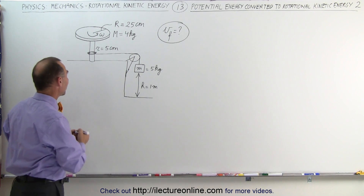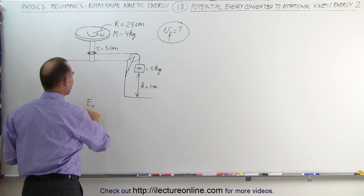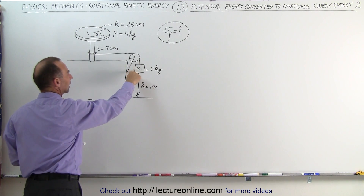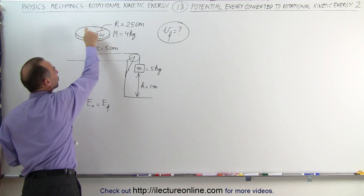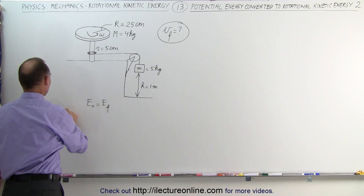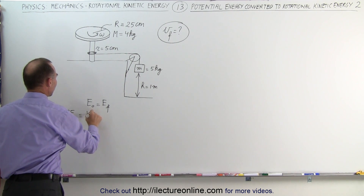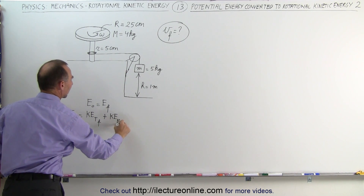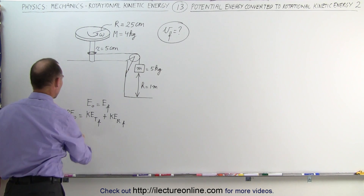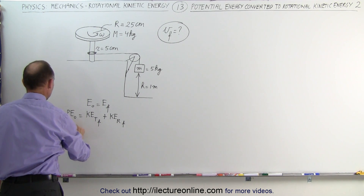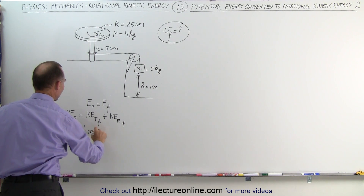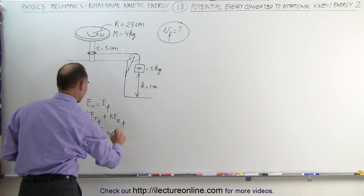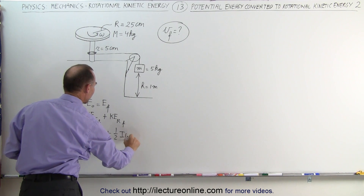The way we approach it is by saying that the initial energy, which is going to be potential energy, is equal to the final energy — a combination of the translational kinetic energy of this mass and the rotational kinetic energy of the disc. So: potential energy initial equals final translational kinetic energy plus final rotational kinetic energy. That is, MGH equals one-half M·V_final² plus one-half I·ω_final².